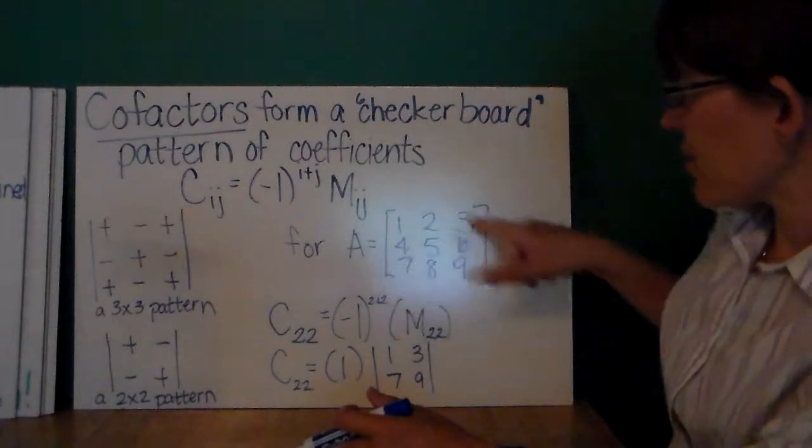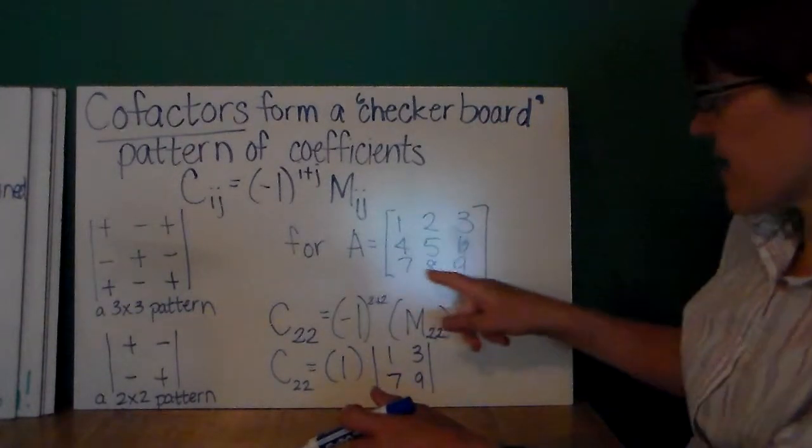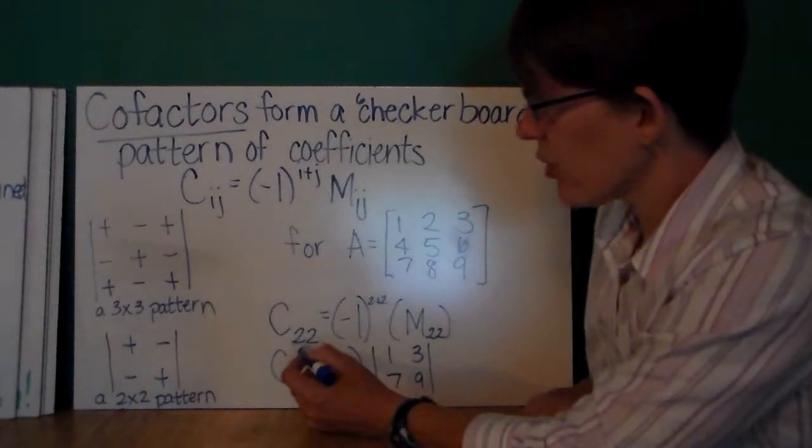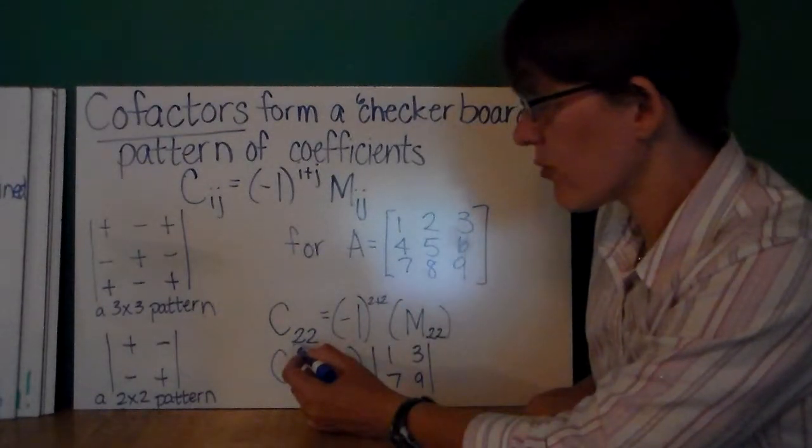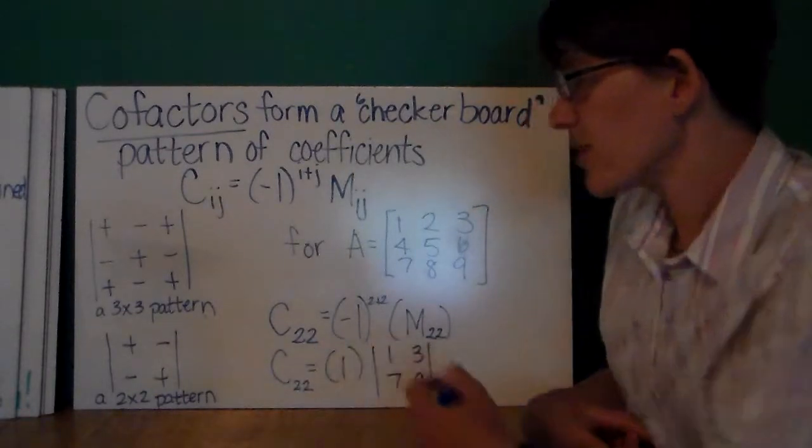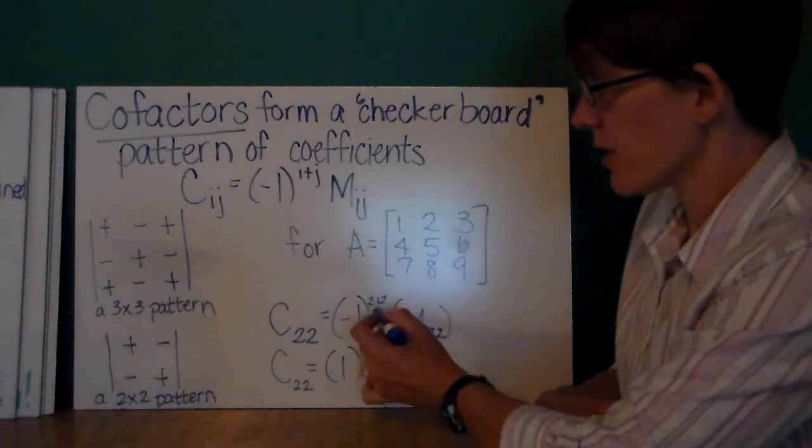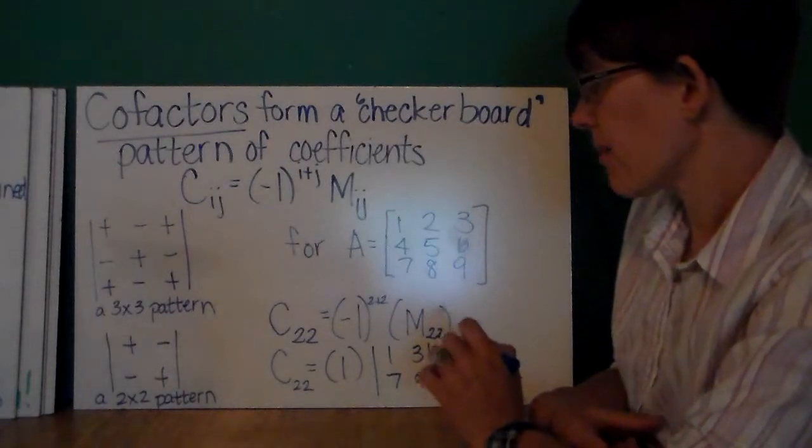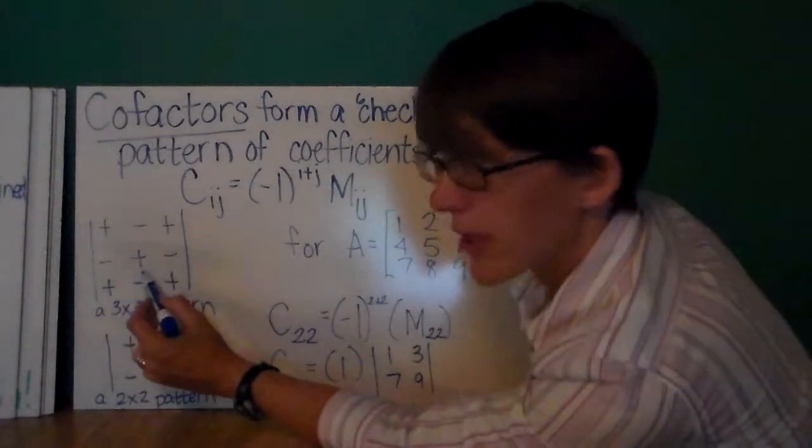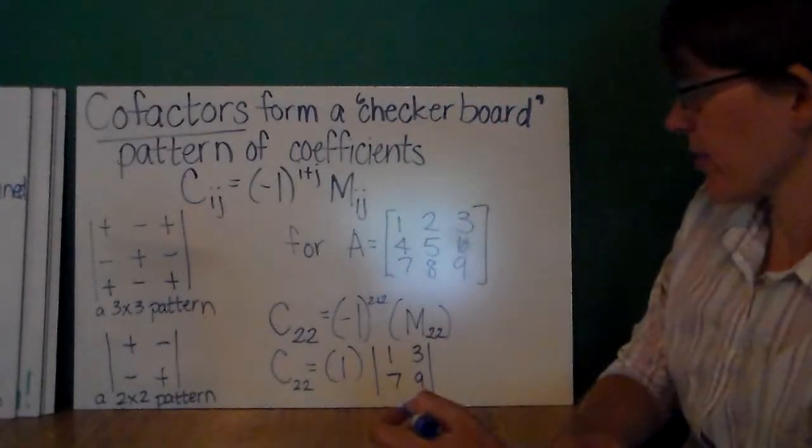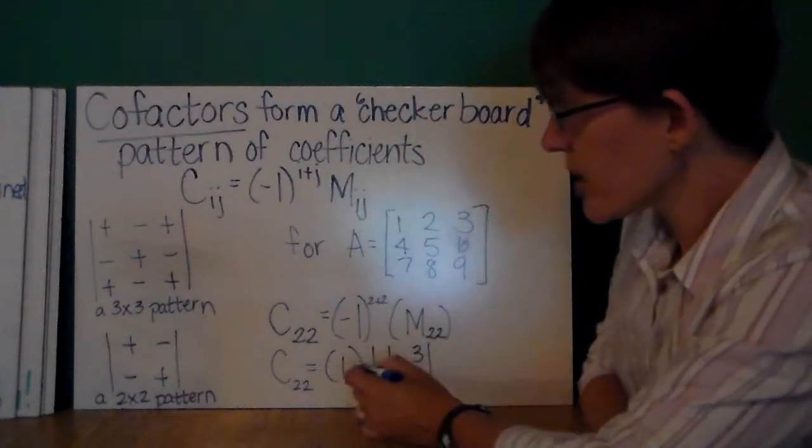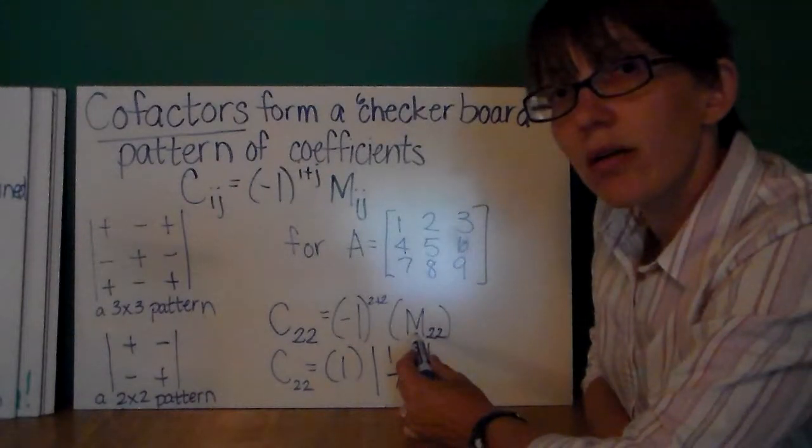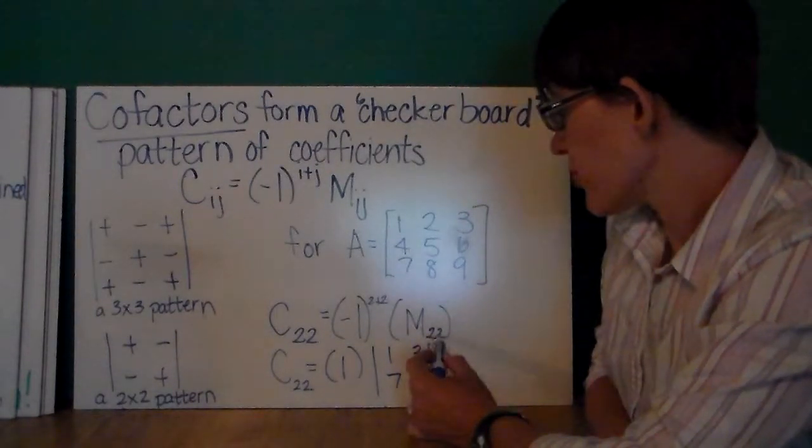So, looking at my same matrix again, 1, 2, 3, 4, 5, 6, 7, 8, 9, if I wanted to find the cofactor for row 2, column 2, I would do negative 1 to the 2 plus 2 power, and that's going to be positive 1. There it is, positive in my checkerboard pattern. And I'm going to multiply positive 1 with the minor of row 2, column 2.